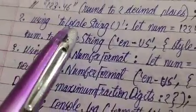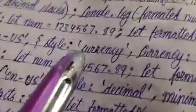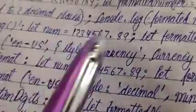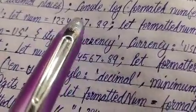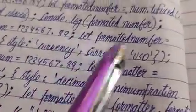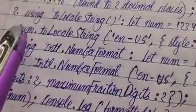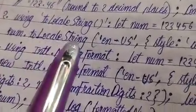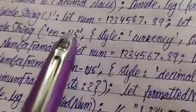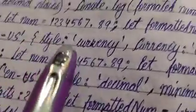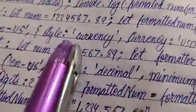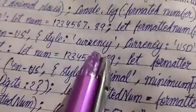Another method is toLocaleString(). The number is 1234567.89. This number uses the toLocaleString() method, which takes two arguments: 'en-US' and a dictionary object with style as 'currency' and currency as 'USD'.